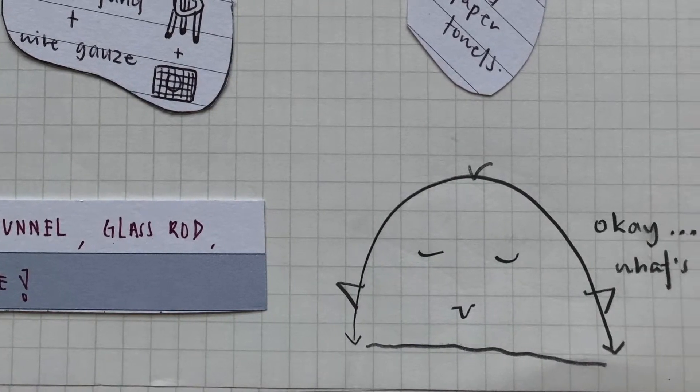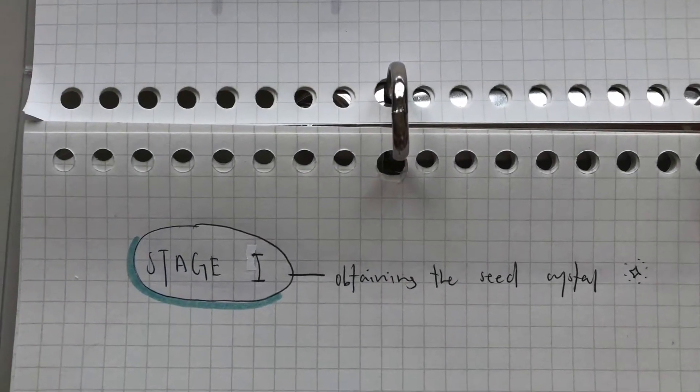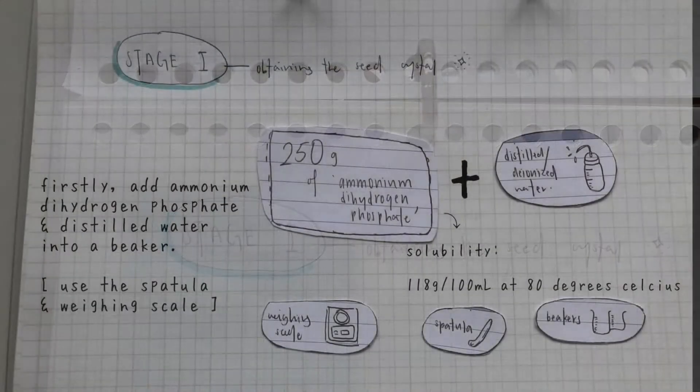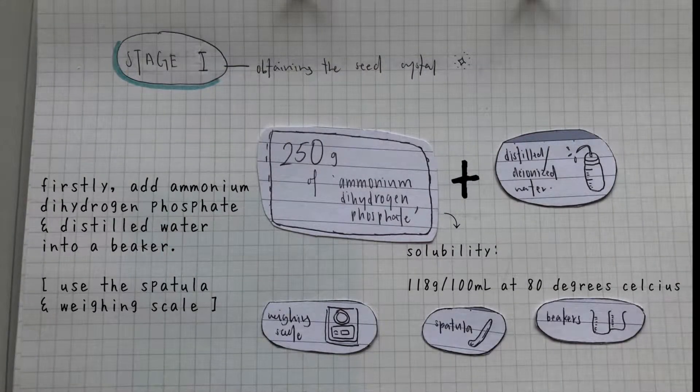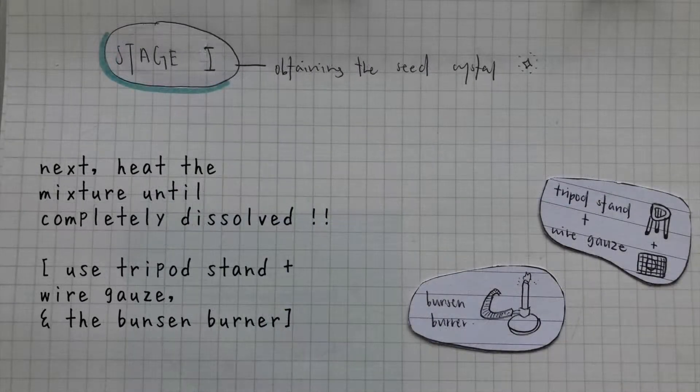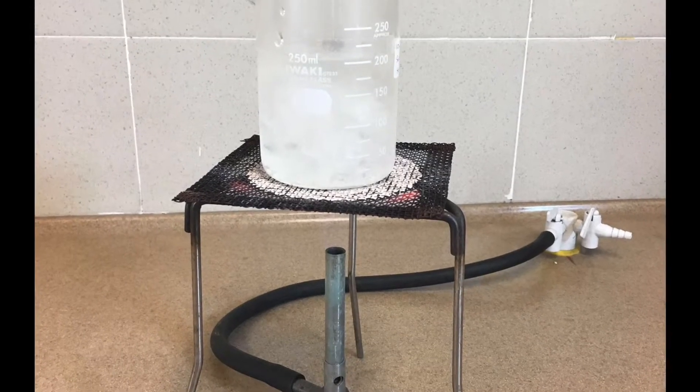The first thing we needed to do is to obtain a seed crystal. We added 250 grams of ammonium dihydrogen phosphate which has a solubility of 118 grams per 100 milliliters of water at 80 degrees Celsius and distilled water into a beaker. Next, we heated the mixture until all of the ammonium dihydrogen phosphate has been completely dissolved.